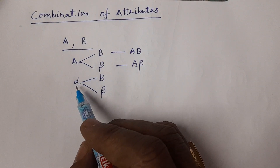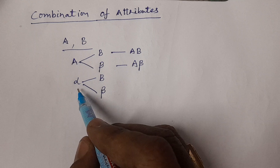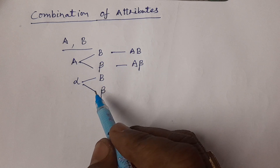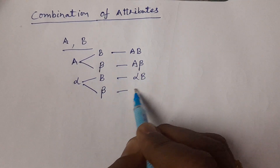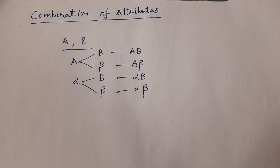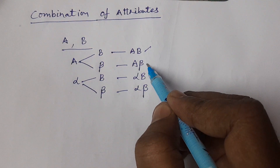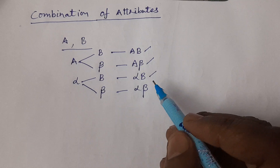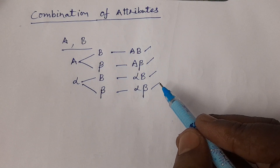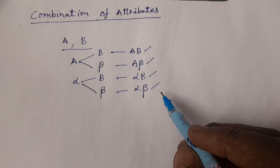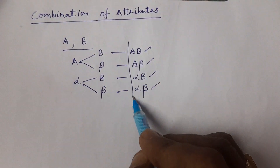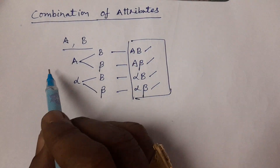Similarly, alpha with B and alpha with beta. So here are four combinations in order: A with B, A with beta, alpha with B, and alpha with beta — the four combinations of attributes for two attributes A and B. This is the way to write and create this kind of tree. This is called a tree.